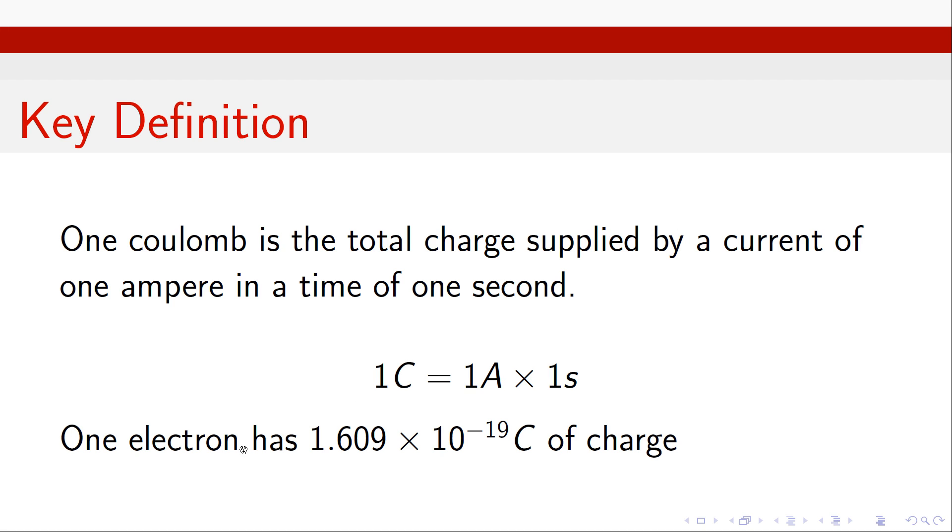The base unit of the fundamental quantity that we link with charge is how much charge is on a single electron. And that is 1.609 times 10 to the minus 19 Coulombs. So an individual electron has this many Coulombs of charge on it.